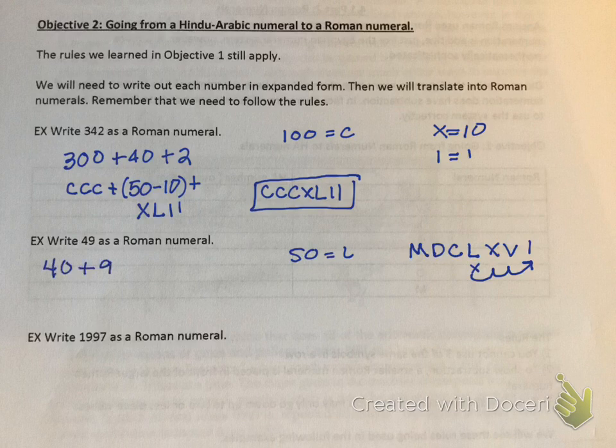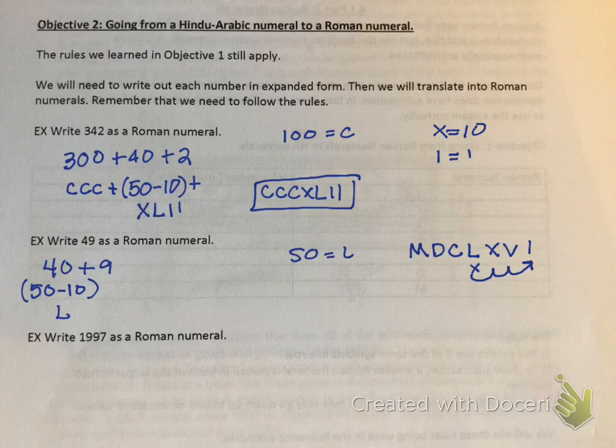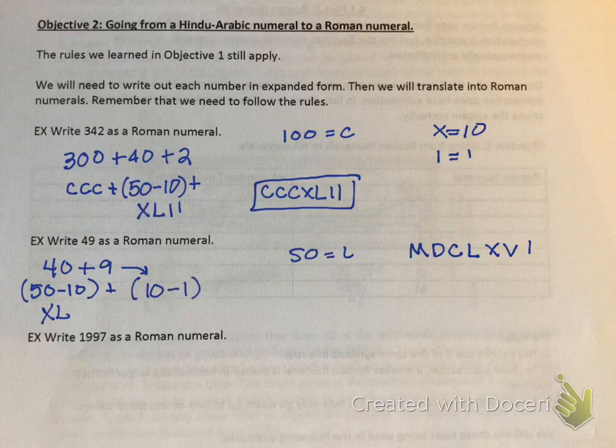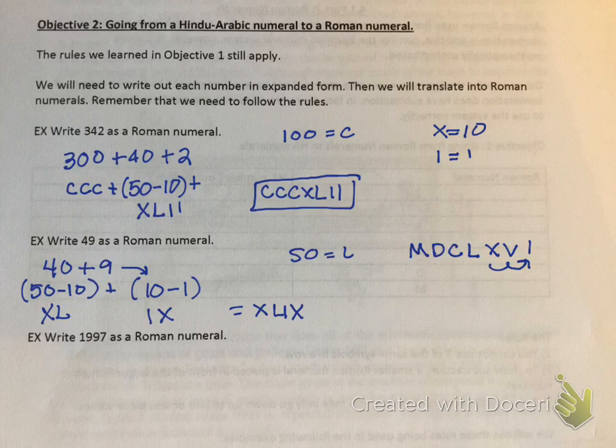So I am going to erase it. So don't put that down. How do I rewrite 50? I'm going to have to write it out in expanded form. Do 40 plus 9. How do I represent 40? I can do 50 minus 10, and that's okay because 50 is L and 10 is X, and X is only one place down from L. And 9, I can do 10 minus 1. 10 is X, and 1 is I, and that's two places down. That's okay. I just can't do any more than two. So what is the answer? XLIX.